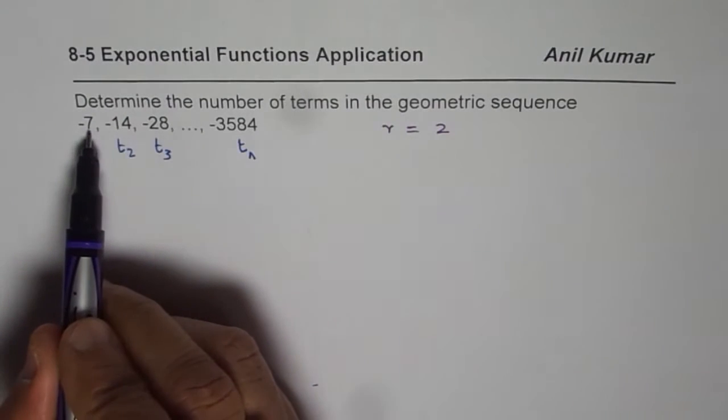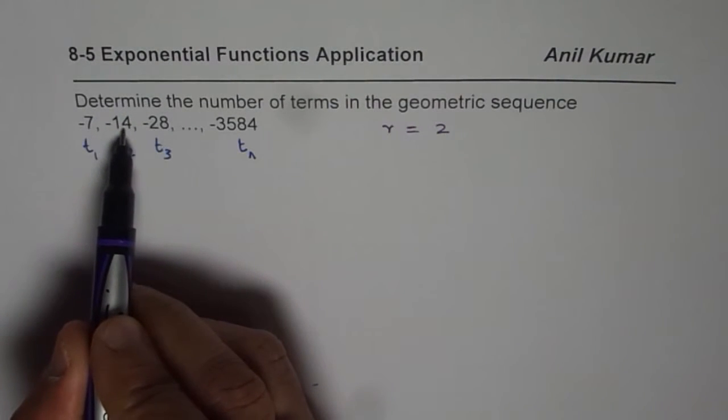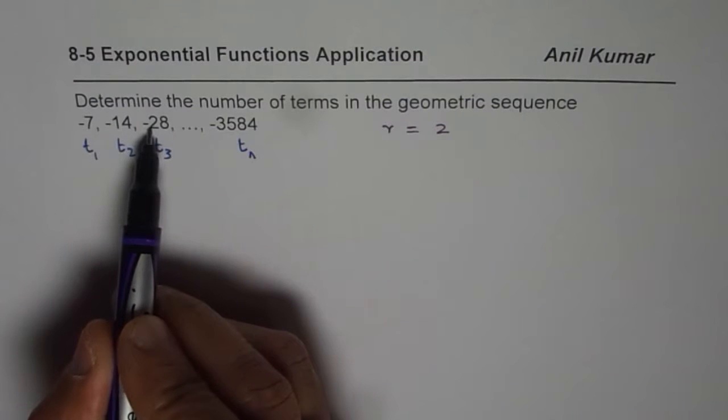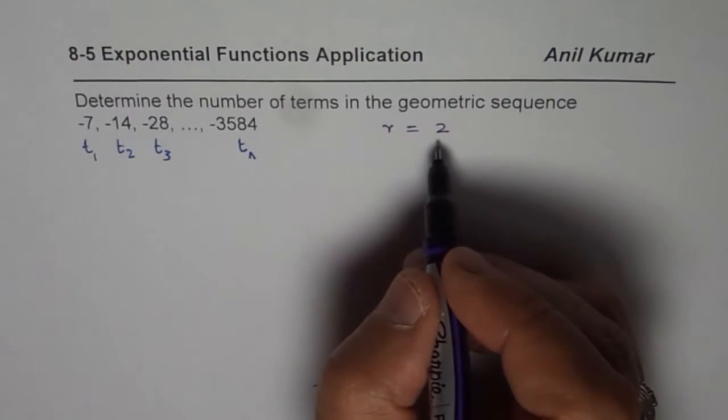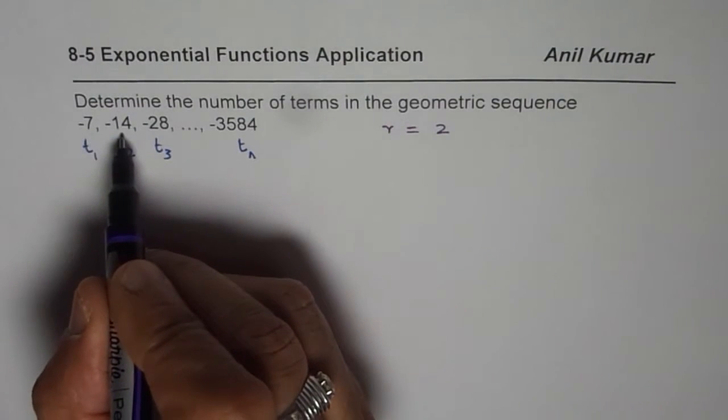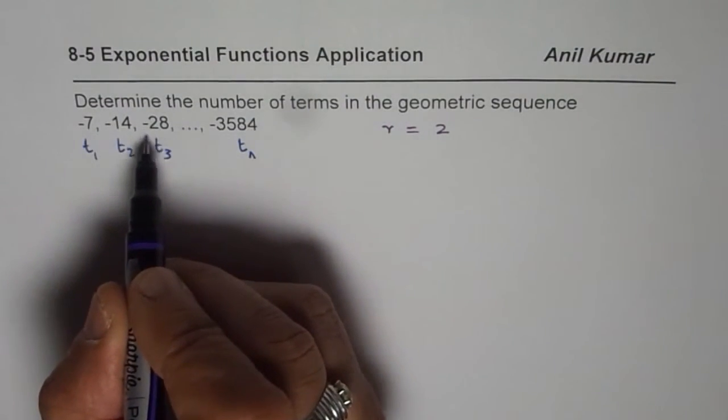So minus 7 times 2 is minus 14, minus 14 times 2 is minus 28 and so on. So that means every time when you get to the next number, you multiply by 2.